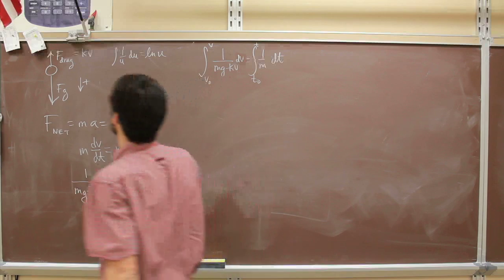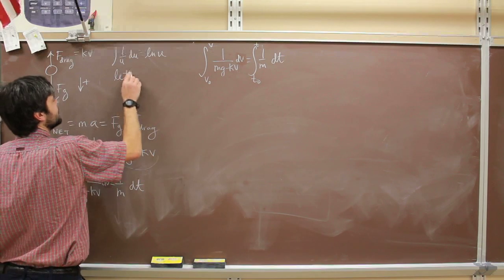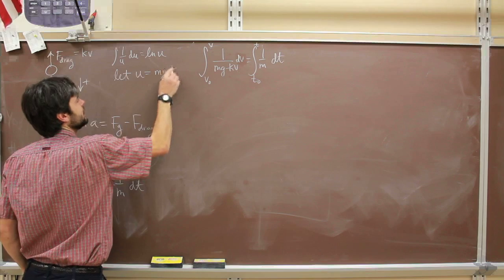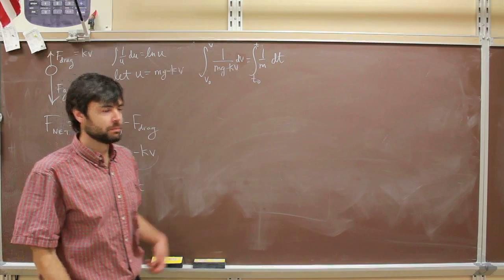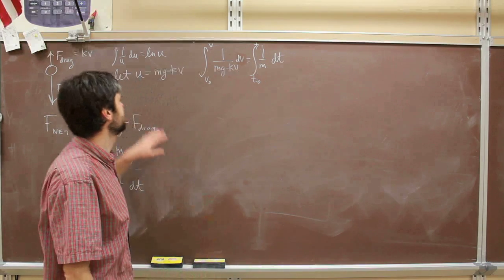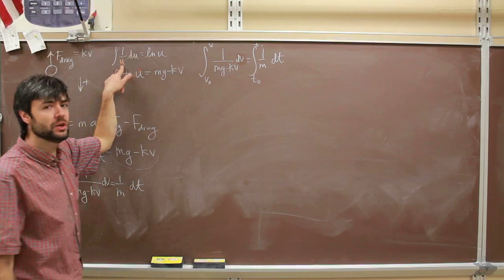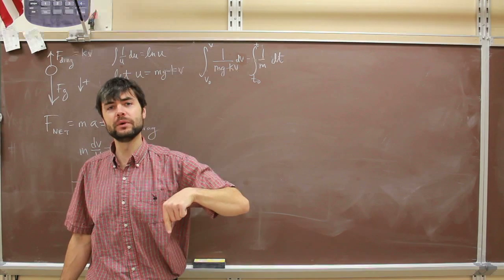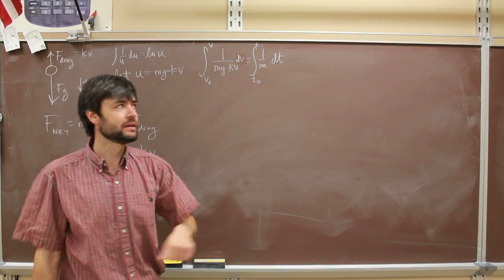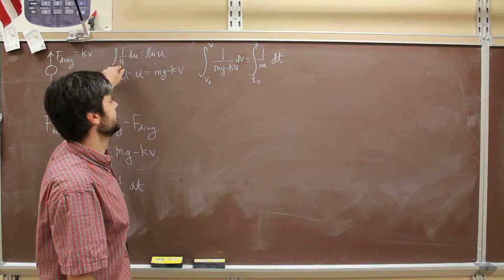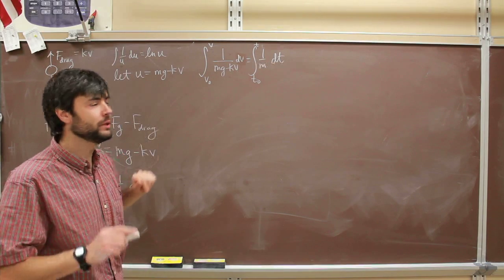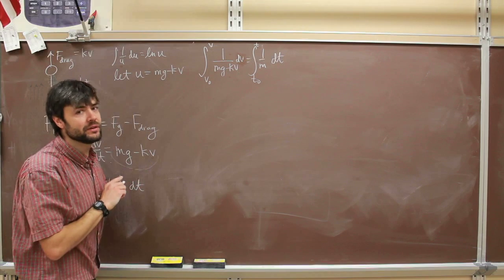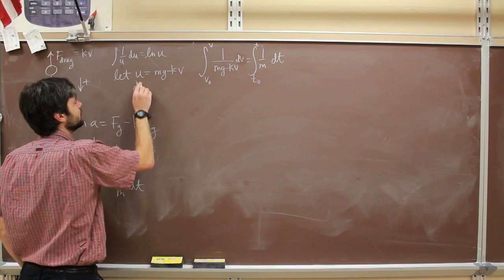I'm going to pull this thing out and I'm going to say let u equal mg minus kV. So I've sort of partially solved my problem. I'm going to make that u. The problem is that now I have 1 over u dv, and I want 1 over u du. So let's see if we can get a du in there. So to do that, let's take the derivative of u to find out what it's going to be.